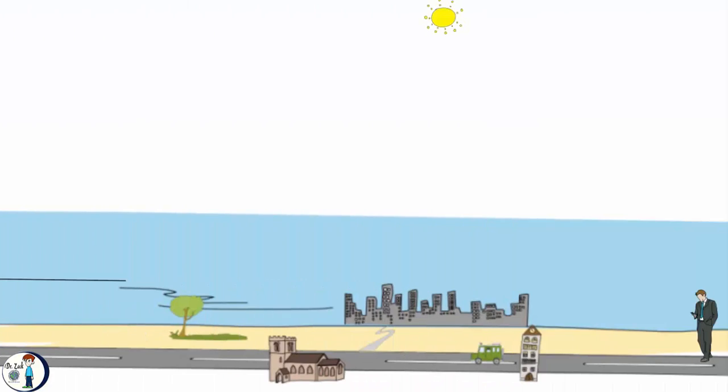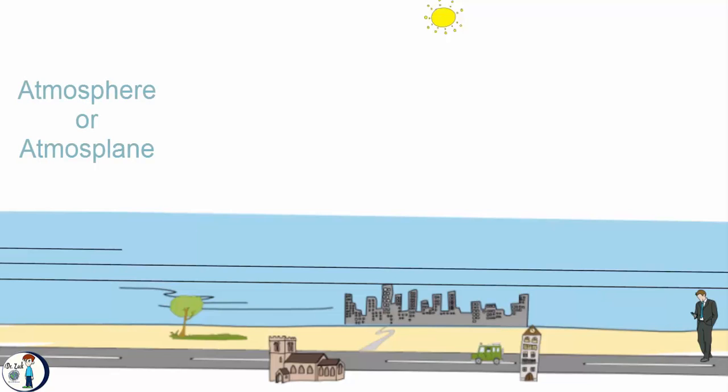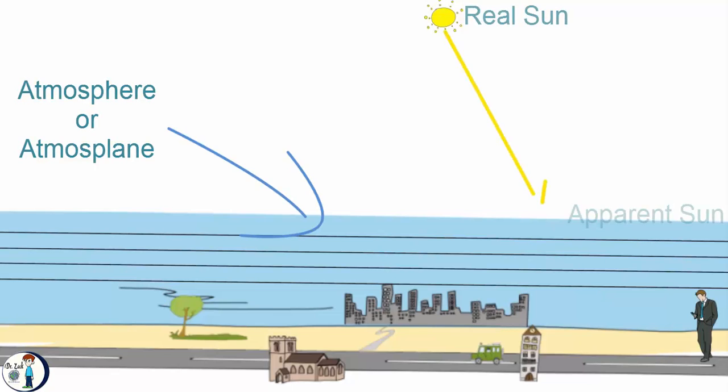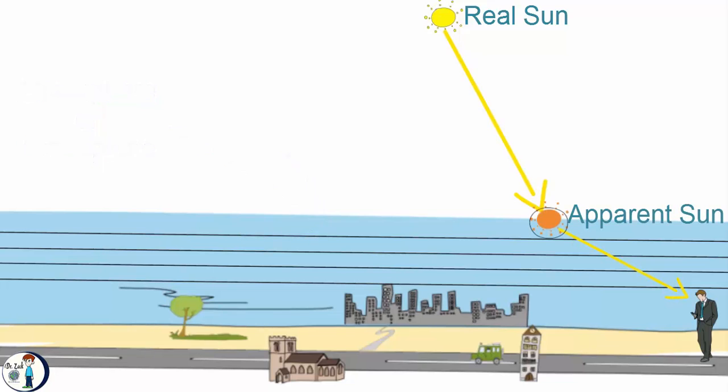Now, picture the sun is above you, and the last layer of the atmosphere or atmosplane is a lot closer to you than the sun. The refraction will happen until the last layer of the atmosplane, which goes to the ground. So looking at the sun from the ground through the atmosplane can make the apparent sun appear lower instead of higher.